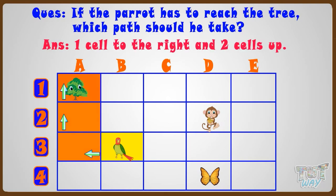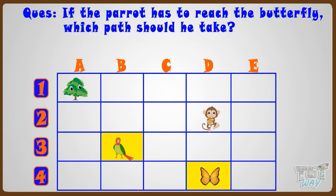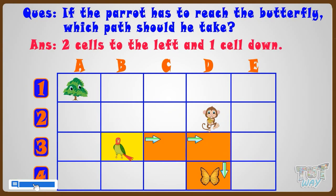Now let's move two cells to the left and then one cell down. So its path should be two cells to the left and one cell down.